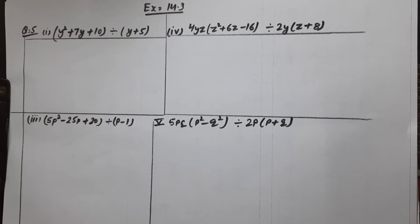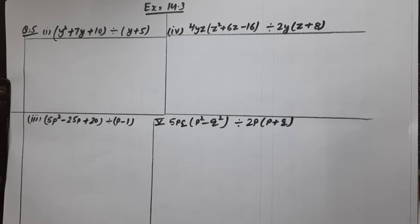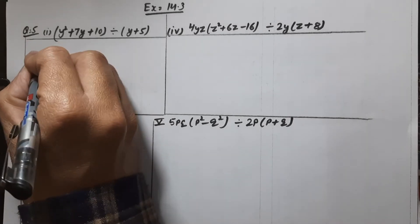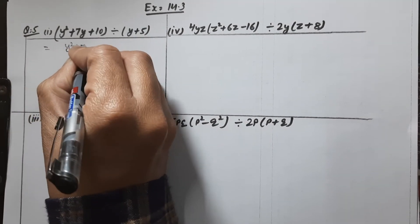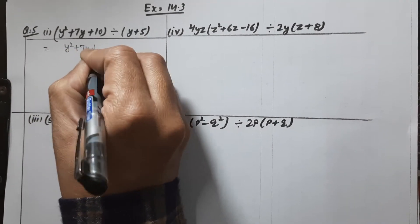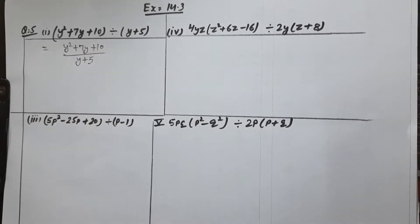Hello children, now we are doing question number 5 of Exercise 14.3. It says factorize the expression and divide them as directed — you have to do the factorization and then divide. The numerator is y squared plus 7y plus 10 over y plus 5.